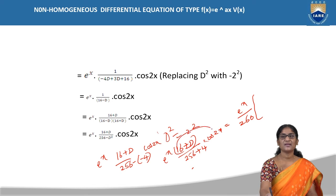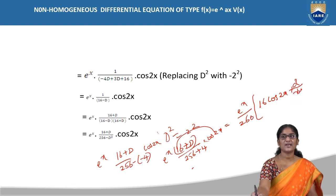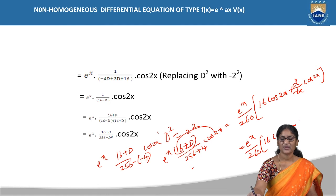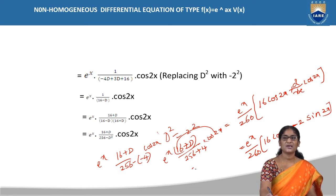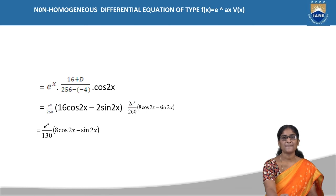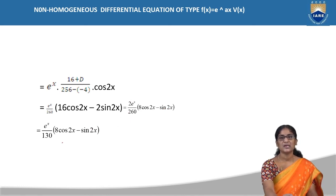Here D acts as the derivative operator d/dx. So (16 + D) · cos2x = 16·cos2x + d/dx(cos2x) = 16·cos2x + (-2sin2x) = 16·cos2x - 2sin2x. Therefore the particular integral is e^x/260 into (16cos2x - 2sin2x). Taking 2 as common and cancelling with 260, this becomes e^x/130 into (8cos2x - sin2x) as the particular integral.